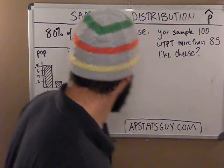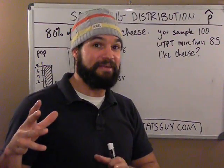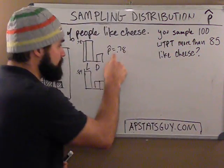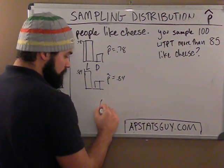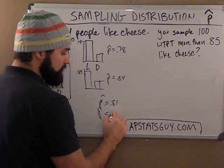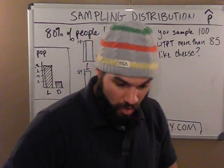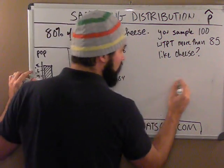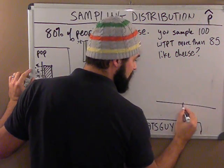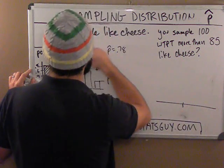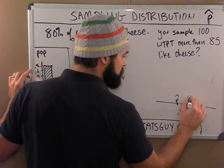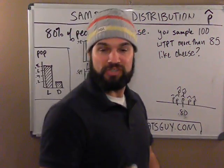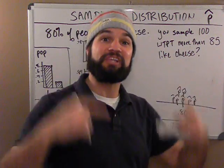This is a cool thing about the central limit theorem — you can take categorical data and transform it into the normal model. The normal model applies when you take a bunch of samples. You get a p-hat of maybe 0.81, then 0.79, and you get a bunch of p-hats. With a large sample size of 100, all those p-hats end up piling up around the true p. The true p in this case is 0.80, and most p-hats from samples of size 100 will be near 0.80.